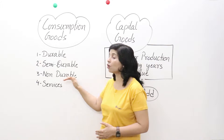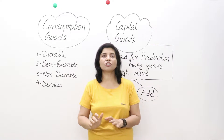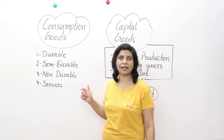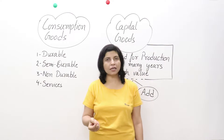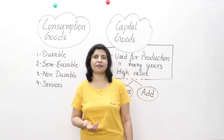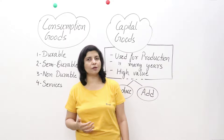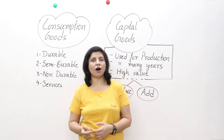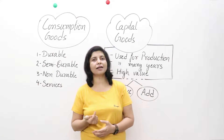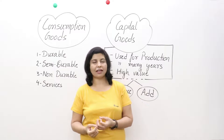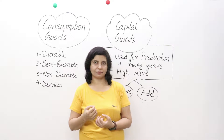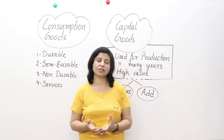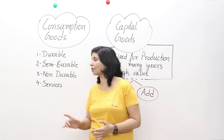Then we have non-durable goods — goods which do not last for long, or single-use goods. Examples include toothpaste, LPG, fruits, vegetables, and all types of eatables. Bread and butter, when we eat them, they vanish, so they are gone in a single use and are known as non-durable or single-use goods.